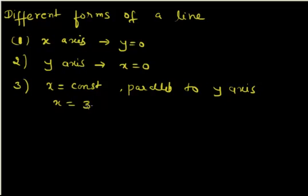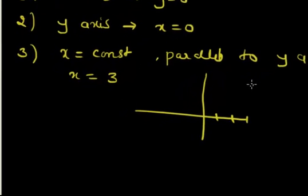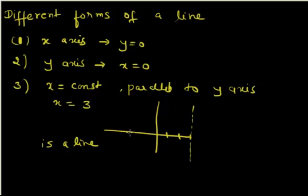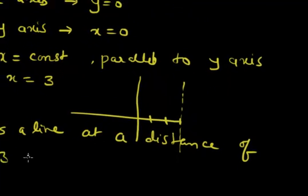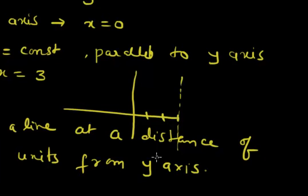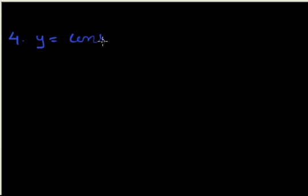For example, x equals 3 is a line which is at a distance of 3 units from the y-axis and is parallel to the y-axis. Similarly, y equals a constant — say y equals 2 — is a line which is parallel to the x-axis.